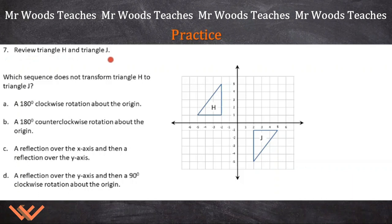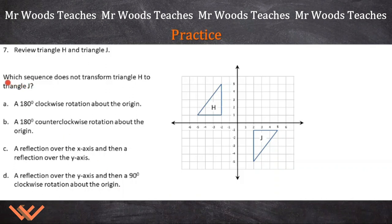Number 7. Review triangle H and triangle J. This looks like it's going to be a transformation, and yes it is. Which sequence does not transform triangle H to triangle J? Here are the H and J triangles. I'm going to circle "does not" — we're trying to find the sequence that is not true here, so we have to work through these.